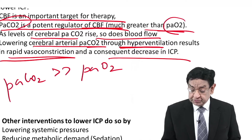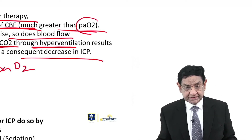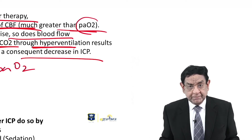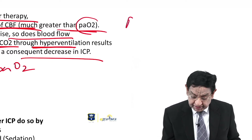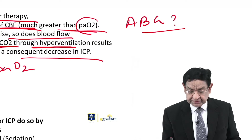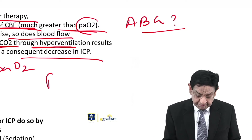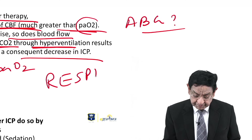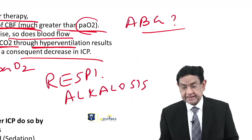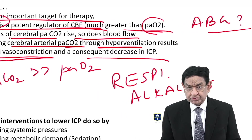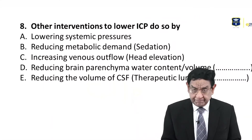Now I have a question for you — stop the video and write down the answer. There is a patient in the ICU and we are doing hyperventilation to wash out CO2. What change will occur in the ABG of this patient? The change that will happen is: as we are doing hyperventilation, the patient will go into respiratory alkalosis. Why? Because CO2 is getting washed out. CO2 is an acid, and when it goes out, that produces alkalosis in the body.